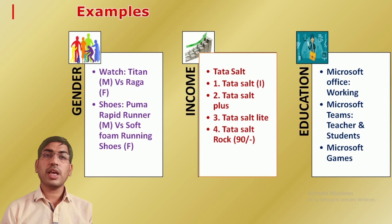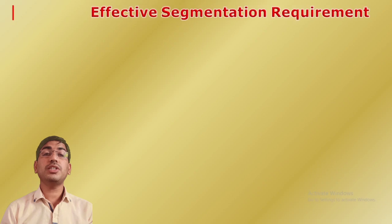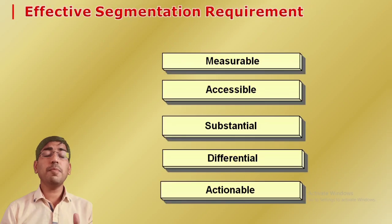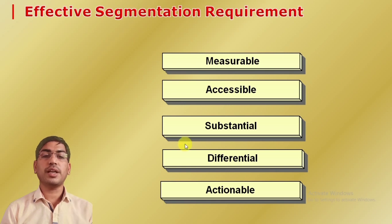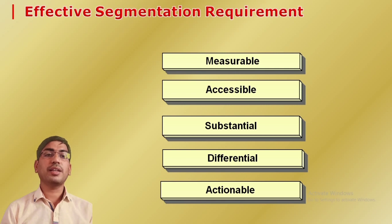Microsoft provides different solutions for education: Microsoft Office for working and professional people, Microsoft Teams for teachers and students, and Microsoft Games for children. These examples show how one brand can serve different segments — like Tata serving both higher and lower income groups. For effective segmentation, there are 5 requirements: measurable, accessible, substantial enough to enter, differential, and actionable.